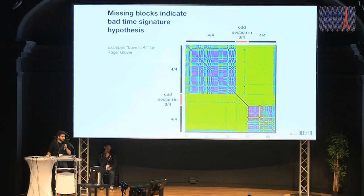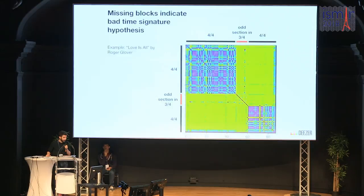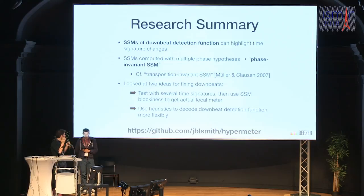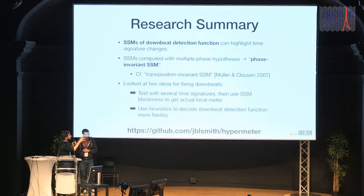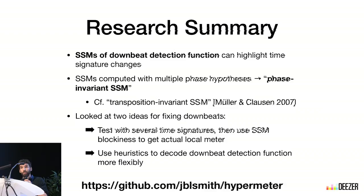We can also find bad time signature assumptions when there are missing diagonal blocks — for example, a song in 4/4 with an entire middle section in 3/4. The findings were that self-similarity matrices of downbeat detection functions can highlight time signature changes. We also looked at ideas for fixing the downbeats, including testing with several time signature assumptions and using the blockiness of the SSMs to get the actual local meter. The downbeat detection function from madmom is really good — we just need to decode it better.